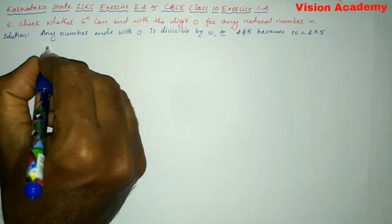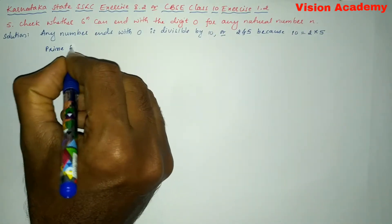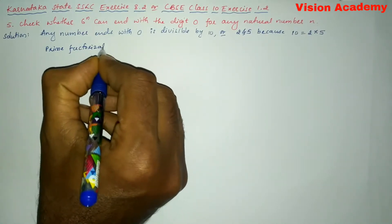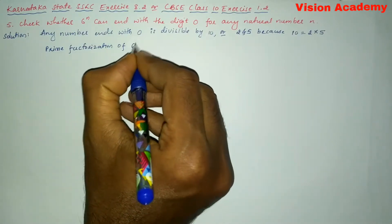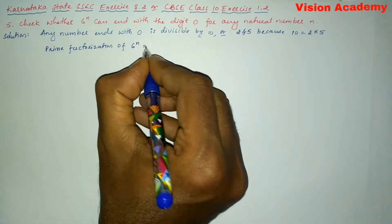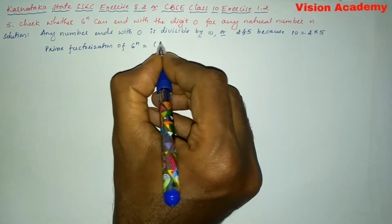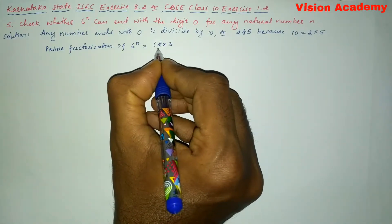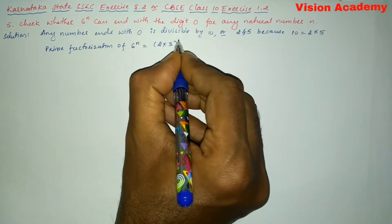Let us write prime factorization of the given number. Prime factorization of 6 to the power n is written as 2 into 3. The product of first two prime factors 2 into 3 is 6 to the power n.